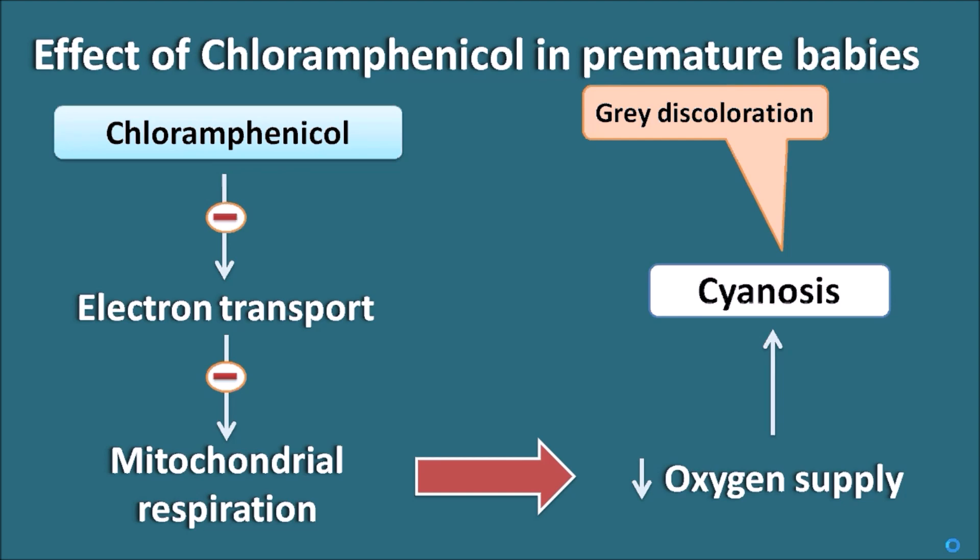The main reason for gray baby syndrome is the excessive levels of chloramphenicol, which is less metabolized and less excreted in premature babies. That is why chloramphenicol is not preferred in premature babies and neonates, as it can affect mitochondrial respiration and precipitate gray baby syndrome.